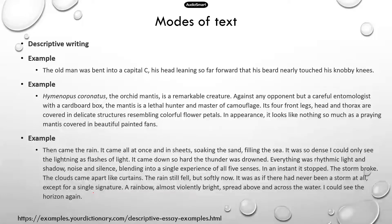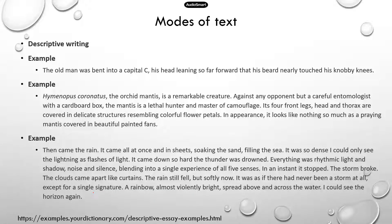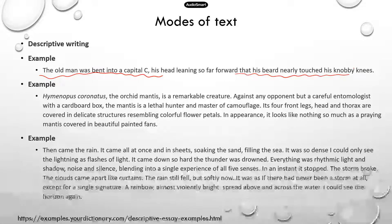I have three examples from a writing website that really represent typical descriptive writing. Remember, descriptive writing is a very vivid description of something — it could be a person. If you read here: 'the old man was bent into a capital C, his head leaning so far forward that his beard nearly touched.' It's a very rigorous description of what the man looks like — you can have that image in your mind.